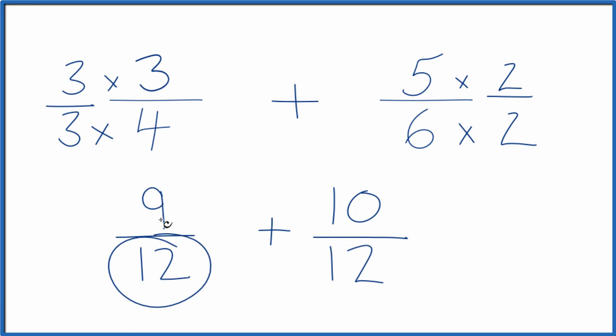We're just going to add the numerators. 9 plus 10 equals 19. And then we just bring the 12 across when we add fractions. So 3/4 plus 5/6, that equals 19 over 12.